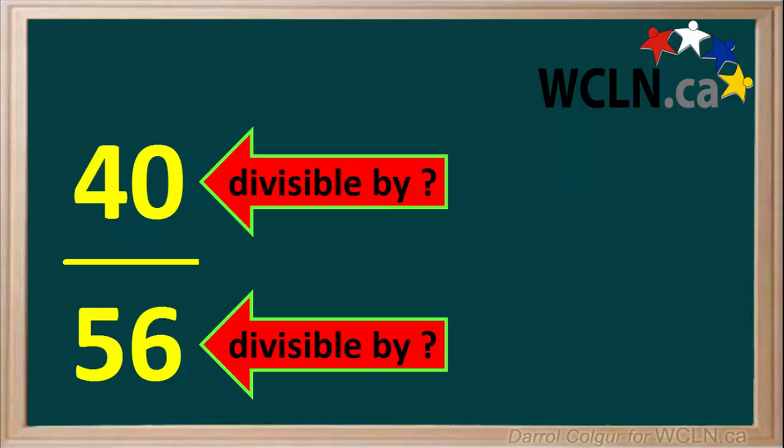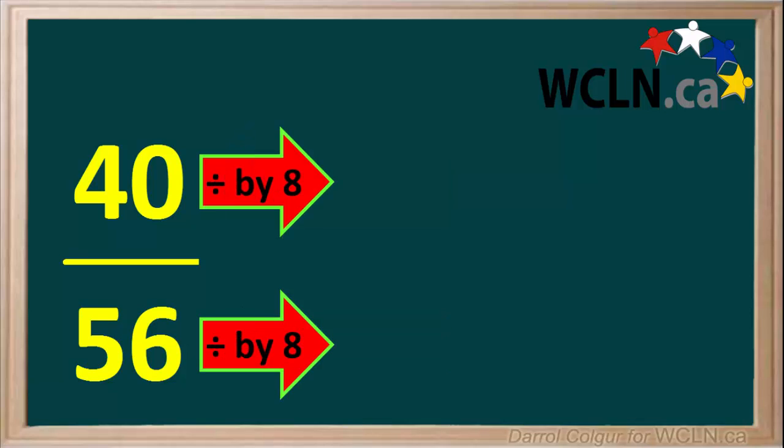We need to find the largest number that will divide into both 40 and 56. Recalling our times table, 8 turns out to be the largest number that will divide into 40 and 56. So we'll divide 40 and 56 by 8 to reduce this to a simpler fraction.